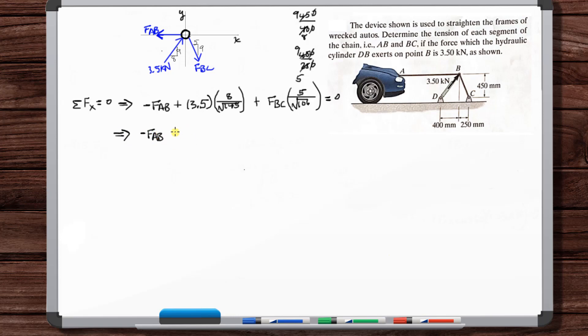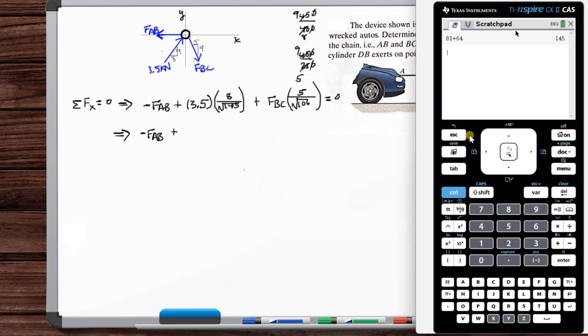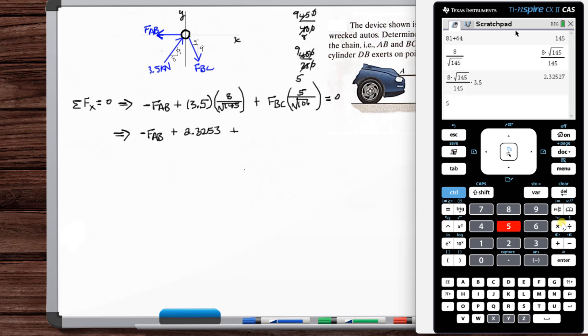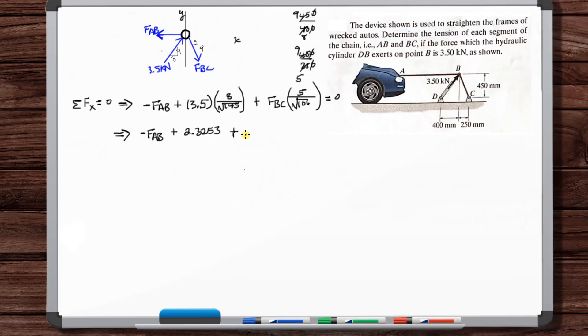So what do we have? We got 8 divided by root 145 times 3.5, so 2.3253. Plus 5 divided by root 106 times F_BC, 0.48564. F_BC is equal to zero.